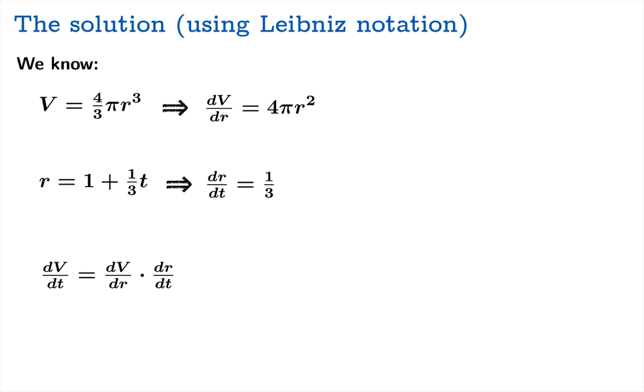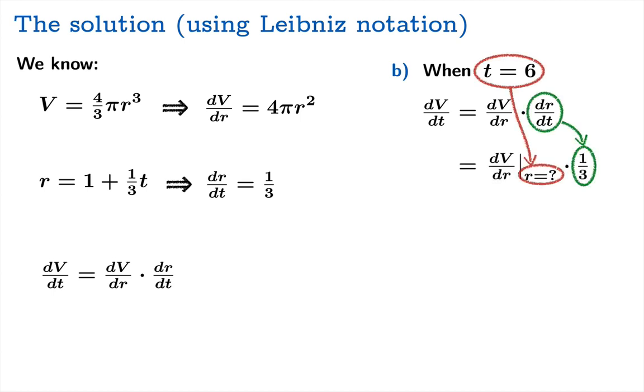So let's move on to problem B. We're supposed to find dv dt when t equals six. Now once again, we know dr dt already is one-third. And now here we have a little bit of a problem because we want to find dv dt when t equals six. But dv dr is set up to accept a radius, so we need to know the radius at this same moment. So we'll look to this formula when t equals six, r is three.